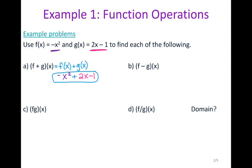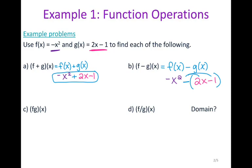For subtraction, I rewrite this as f of x minus g of x. My f of x is negative x squared, and my g of x is 2x minus 1. With subtraction you have to be really careful because you are subtracting this entire quantity of 2x minus 1, so the second function must always be in parentheses. Distribute the minus: negative x squared minus 2x plus 1. If you didn't use parentheses, that last term would have the wrong sign — minus 1 instead of plus 1.